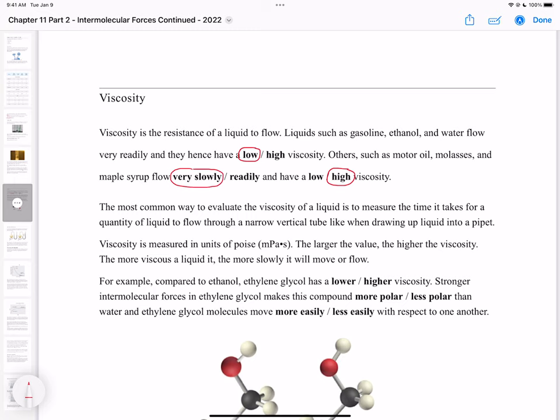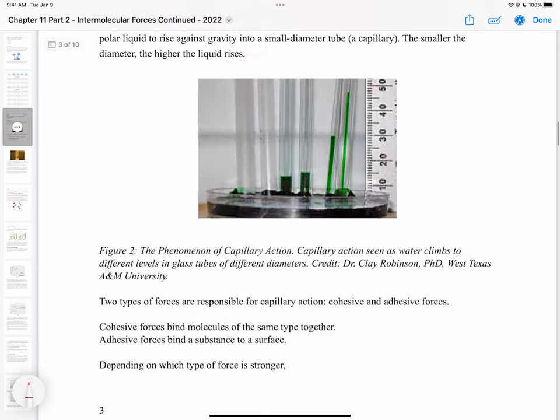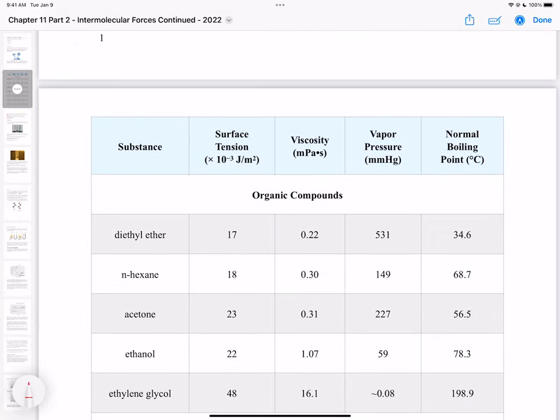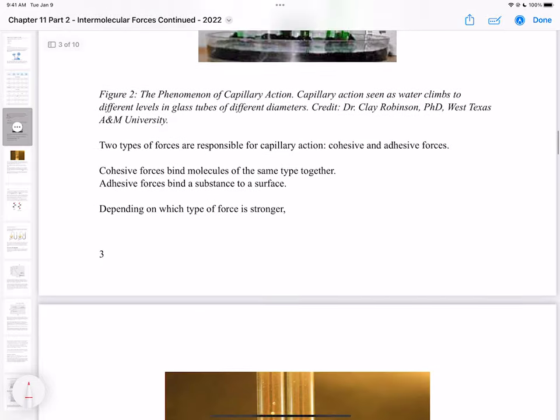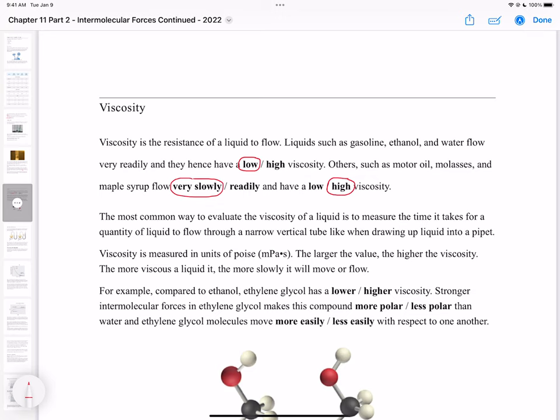There are ways to measure viscosity. In the lab you'll use a viscometer, but the most common way is to measure the time it takes for a certain amount of liquid to flow through a narrow vertical tube, similar to when you draw liquid into a pipette. We measure in units of poise.